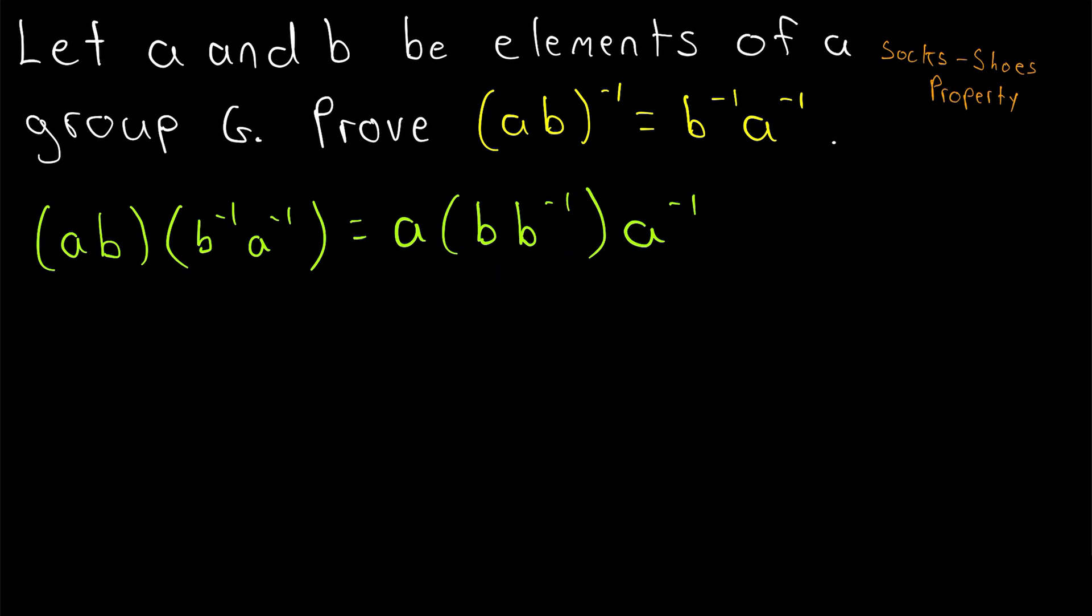B and B inverse, of course, combine to equal the identity. So this is equal to A times the identity times A inverse. And we could group these elements however we want. Let's say we group A with E like that. A combined with the identity is, of course, just A. So we are left with A combined with A inverse, which by definition of inverse is equal to the identity.